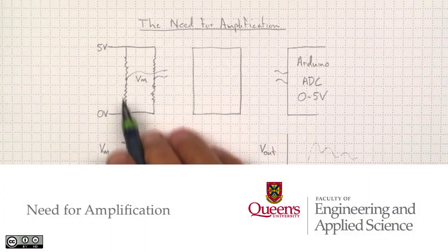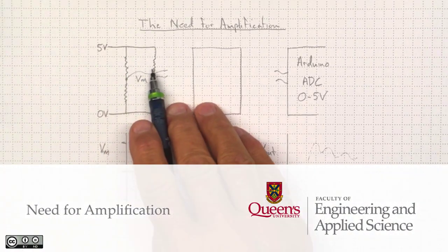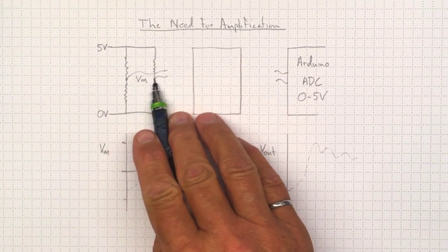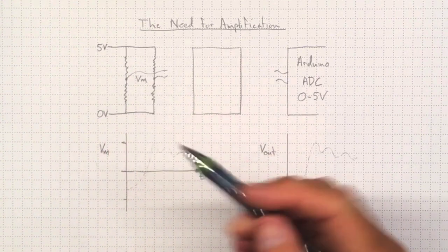One of the things we've noticed is that if we have, for example, the Wheatstone bridge circuit like this one, this measured voltage that we get out is going to be small. It's going to be on the order of millivolts.